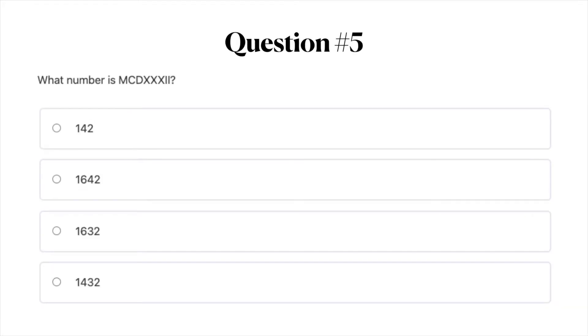Question number five. What number is MCDXXXII? So you need to convert this Roman numeral and your answer options are A, 142, B, 1642, C, 1632, or D, 1432. You can go ahead and pause the video here and when you're ready move on to question number six.